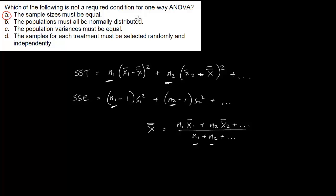So it would be wrong to say that we have to have equal samples. Now, all of the other ones here, that the populations must be normally distributed, the variances must be equal, and the samples for each treatment must be selected randomly and independently, those are your required conditions for ANOVA. So you would want to have that next to ANOVA on your cheat sheet, because they'll be asking this sort of question. But we're looking for A, we're looking for the one that does not fit. So A is not a required condition.